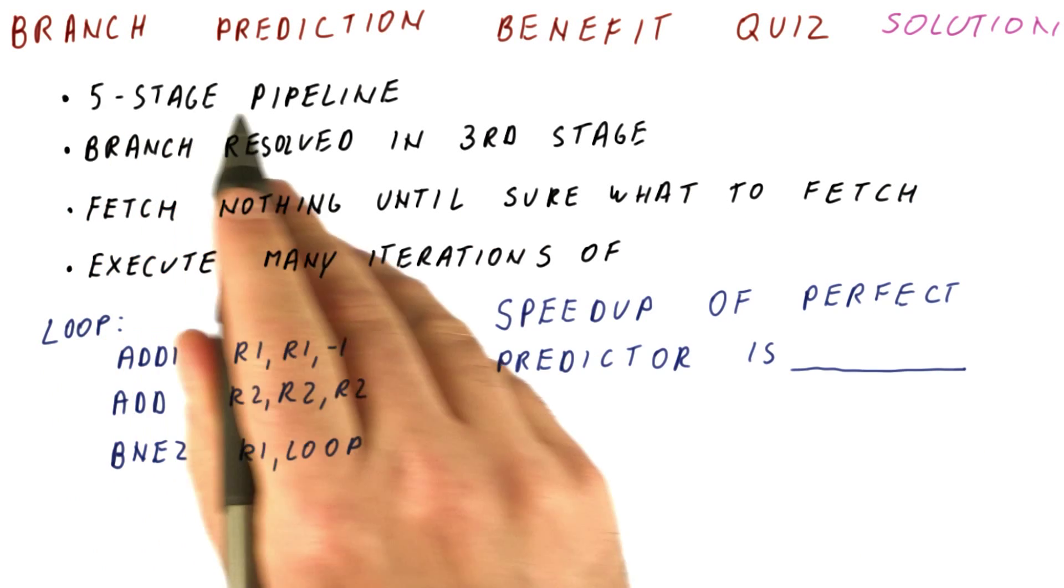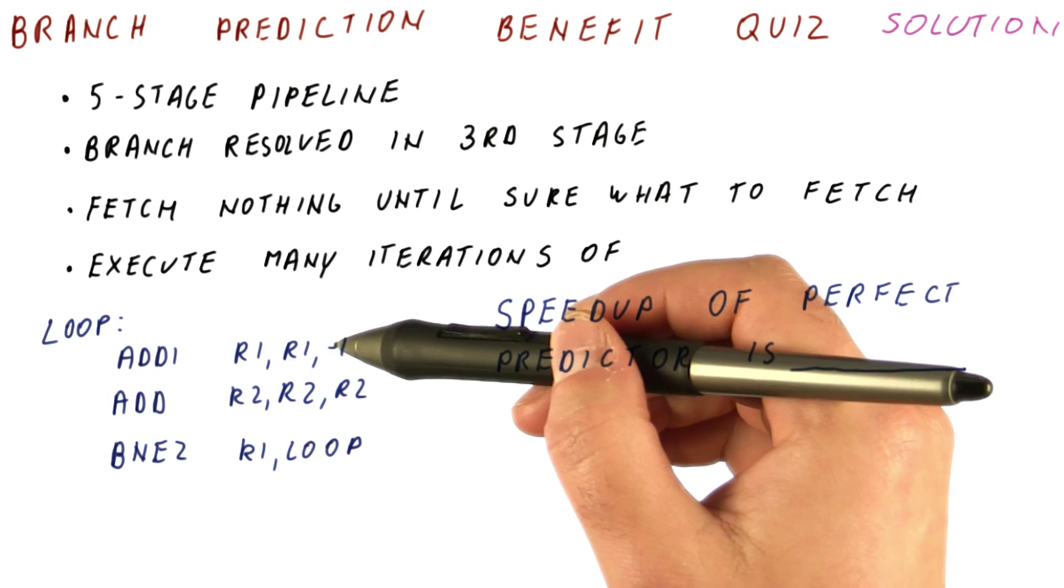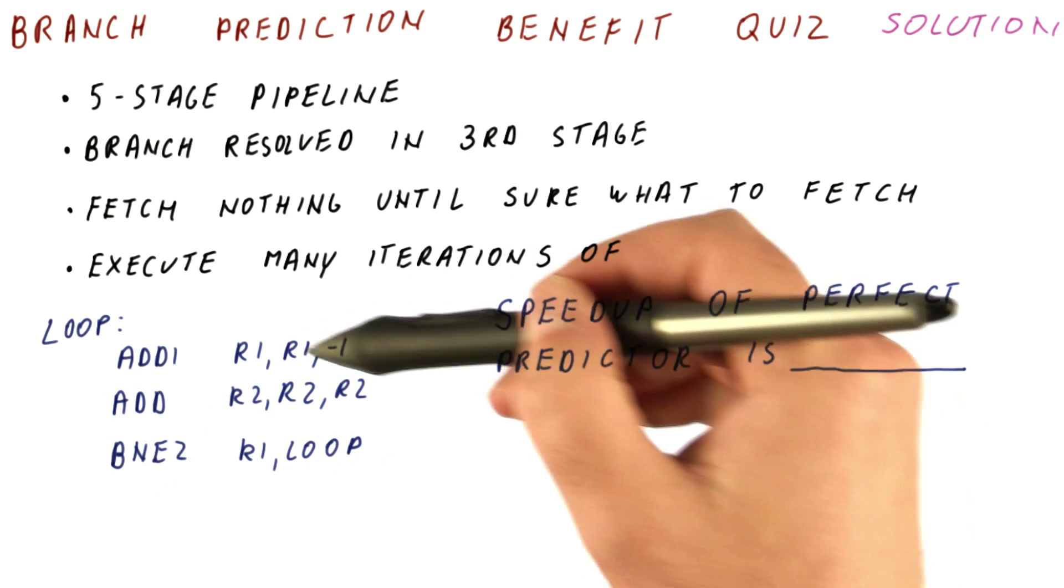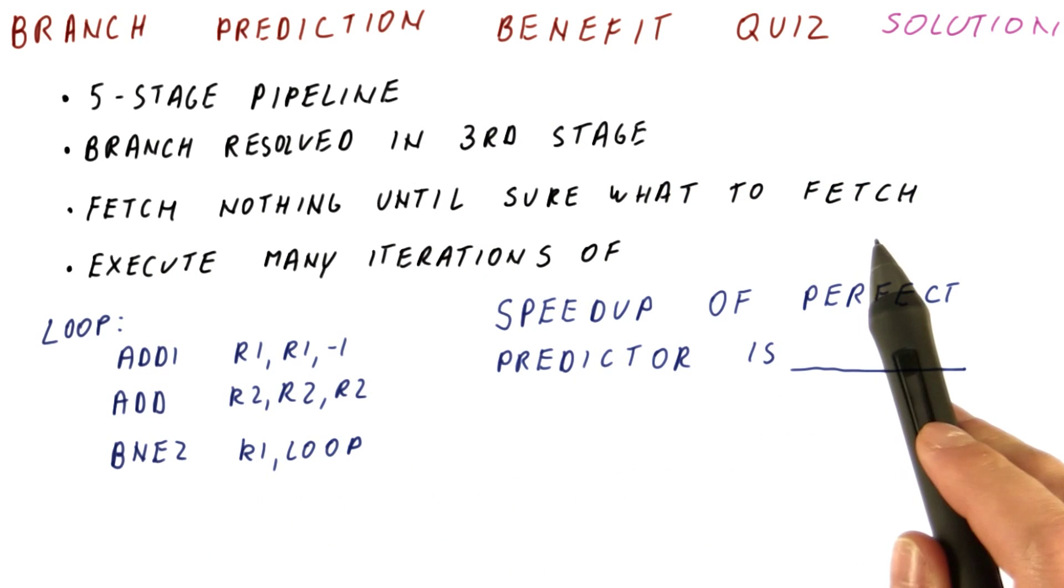Let's discuss the solution for our branch prediction performance quiz. The first thing we want to do is figure out how many cycles we're spending per iteration of this loop in the case where we are fetching nothing until we are sure what to fetch.